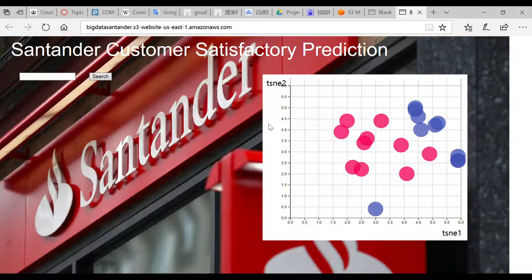Now, suppose I am a staff from Santander Bank and I want to see more details of an unsatisfied customer. I can just move my mouse over the spots and see the ID, like this one is 65815.